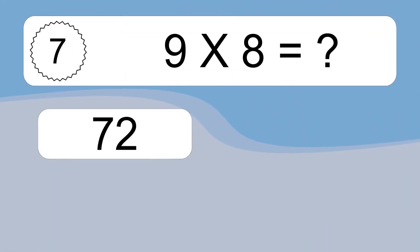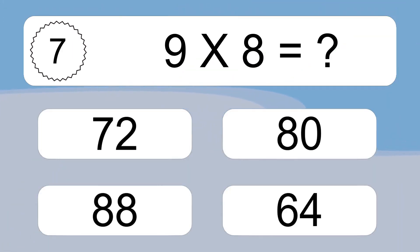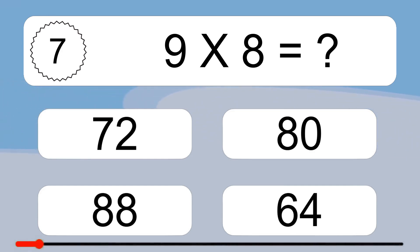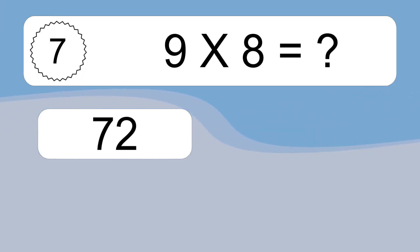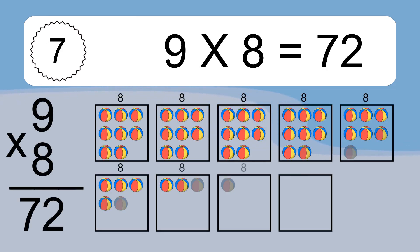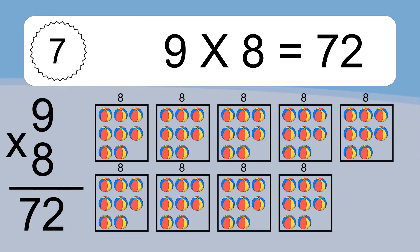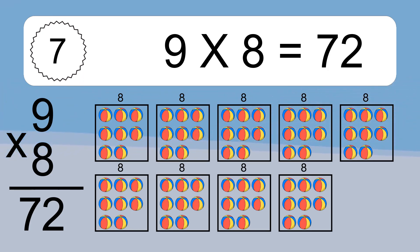Nine times eight equals what? Nine times eight equals seventy-two. We have nine boxes, and each box has eight colorful balls inside. If you count all the balls in all the boxes together, you will have nine times eight balls.